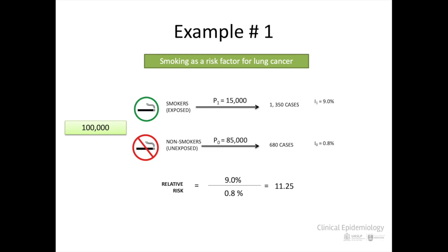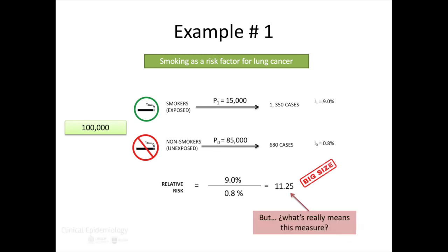We can interpret this as: it is 11 times more likely for lung cancer to occur in smokers. This is undoubtedly a very high RR that leaves no question to establish a causal relationship between smoking and developing lung cancer. From a clinical pathophysiological point of view, the relative risk measure is very important to establish a cause-effect association. But what is the use of people knowing this?